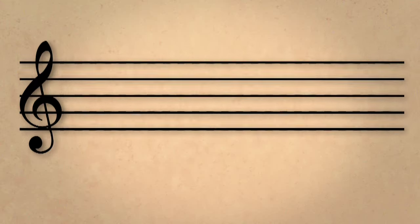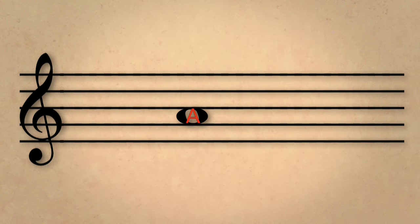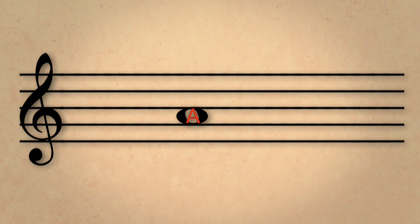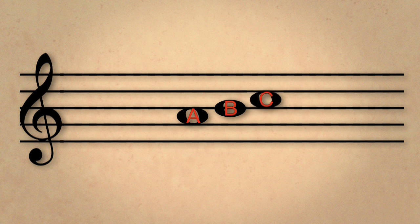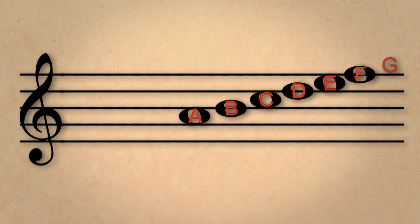On the staff with a treble clef, A is on the second space. Continuing up, the next note is B. That'll be on the third line. Then the third space is C. The fourth line is D. The fourth space, E. The fifth line, F. And above the staff, a G.